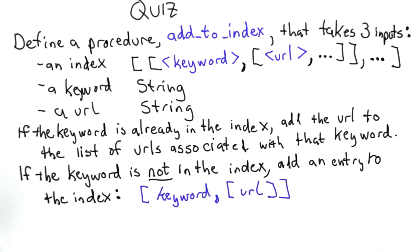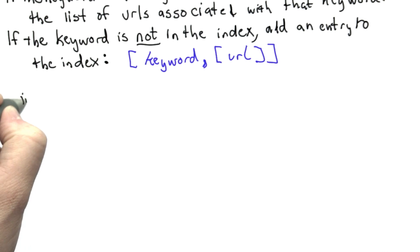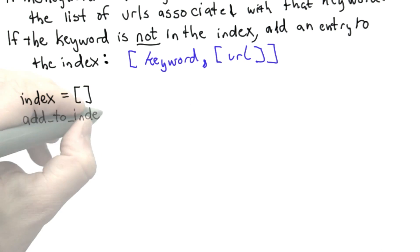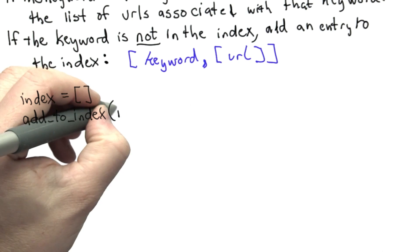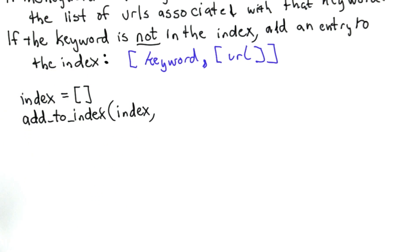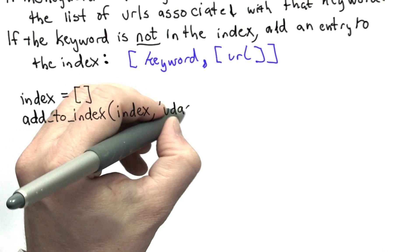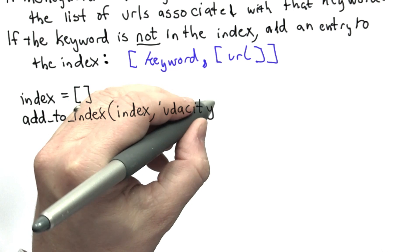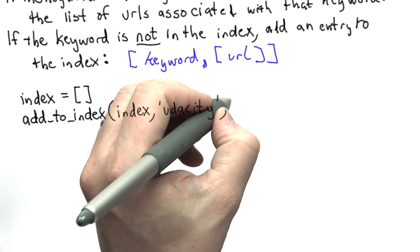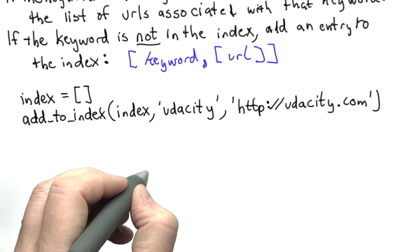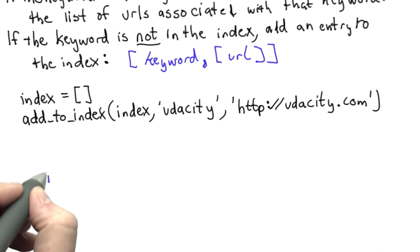Since it wasn't already in the index, it'll be a list containing just one URL — that's the list we want to add to the index to represent that we found this keyword at this one URL so far. Let's work through an example. Suppose we start by initializing index to the empty list — we have no entries in our index yet. Then we'll call addToIndex, passing in the index as the first input.